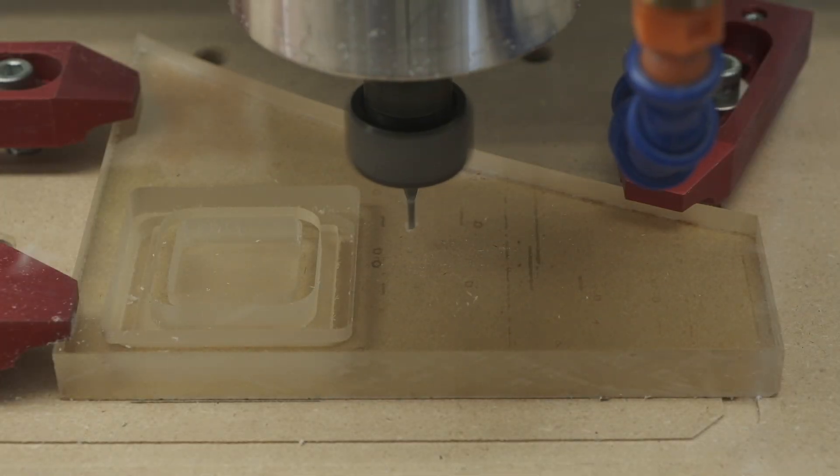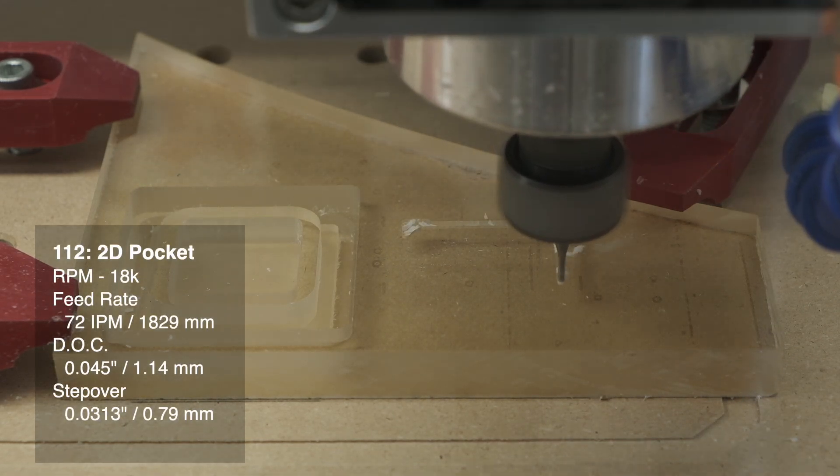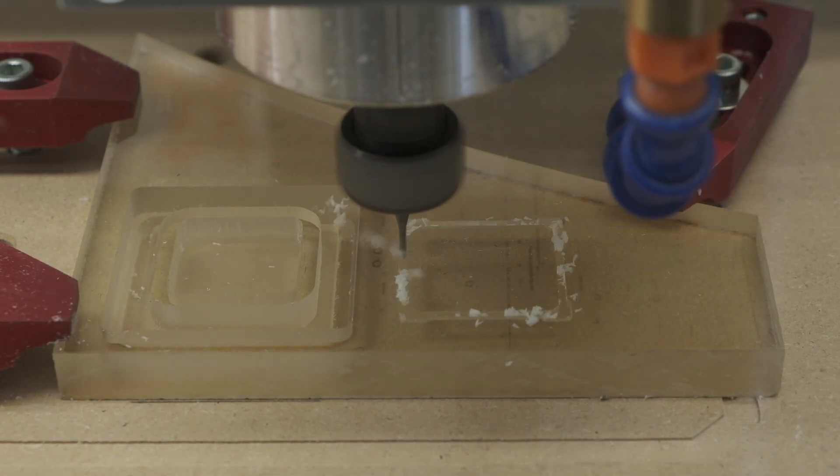Starting off small with a sixteenth-inch two-flute square end mill, for pocketing I like 18,000 RPM, 72 inches per minute feed rate, a 0.045 inch depth of cut, and a 0.032 inch step over.